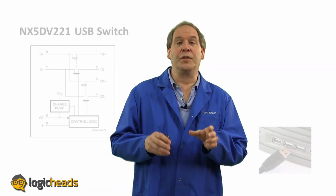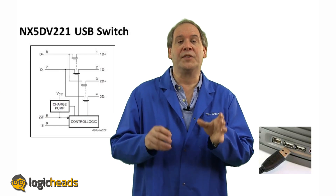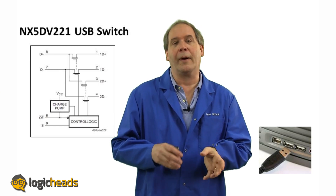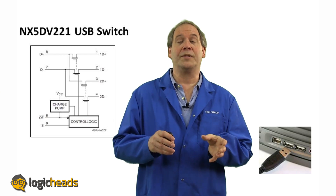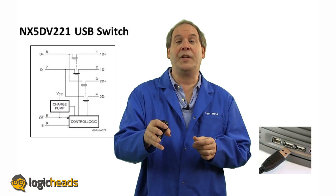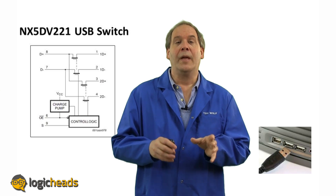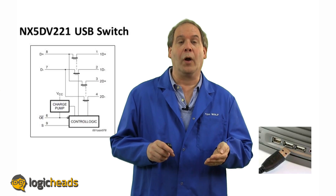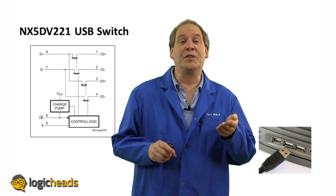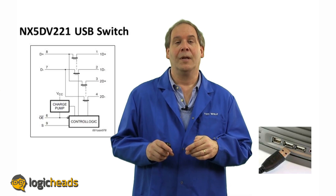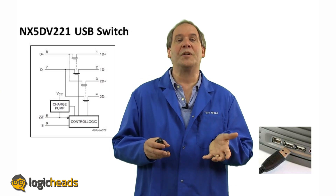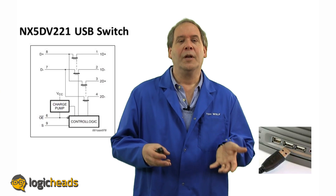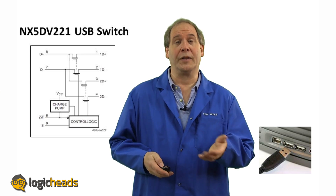A data switch is usually used to describe a switch tuned for a very particular type of data, like USB, HDMI, or MHL, which are all connector standards. The NX3DV221 is such an example — it's made for routing USB signals. With one of these, you could have one controller on your motherboard connected to two different USB sockets. You don't use all those USB connectors at the same time anyway, so why dedicate a USB controller to one? Share the expense by sharing the connectors.